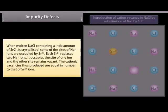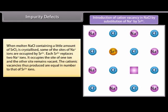Impurity defects: When molten NaCl containing a small amount of SrCl₂ is crystallized, some of the sites of Na⁺ ions are occupied by Sr²⁺ ions. Each Sr²⁺ replaces two Na⁺ ions — it occupies the site of one ion and the other site remains vacant. The cationic vacancies thus produced are equal in number to the Sr²⁺ ions.